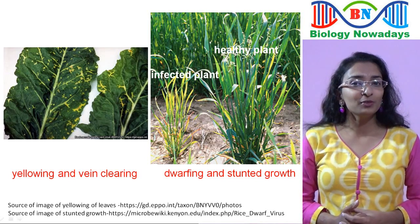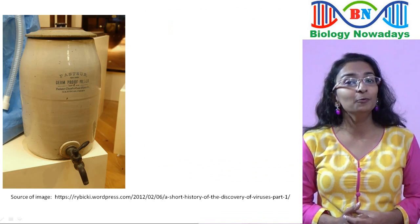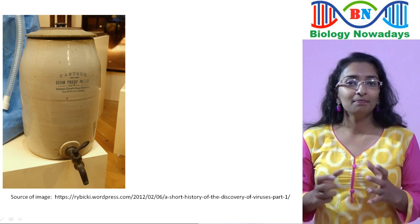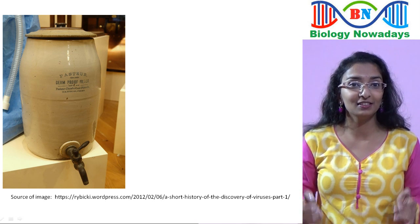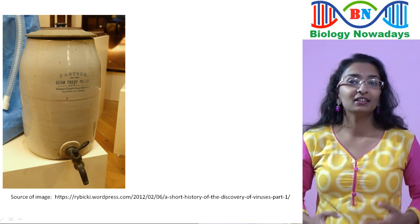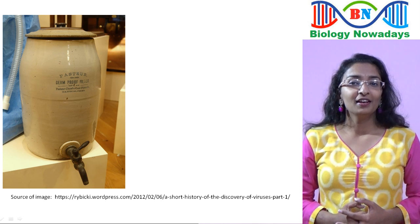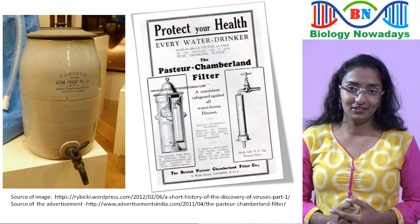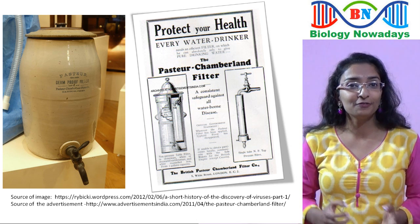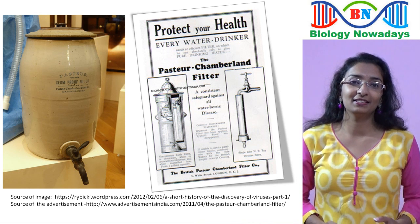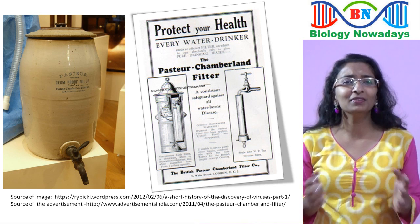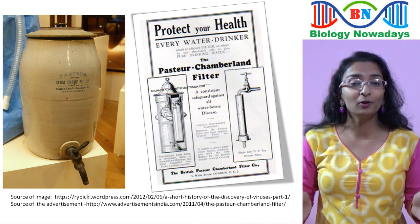In 1884, French microbiologist Charles Chamberland invented a filter called the Pasteur-Chamberland filter, with pores smaller than bacteria. If we pass a solution containing bacteria through this filter, all the bacteria get trapped and the solution that comes out is free of bacteria. The company which manufactured this filter claimed it would protect users from all waterborne diseases caused by microbes, so it was used by common people to get pure drinking water.